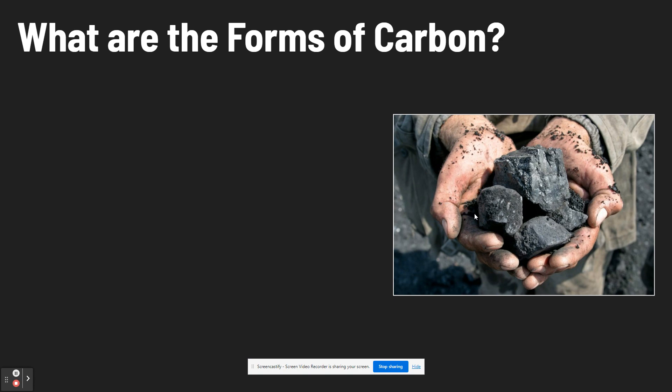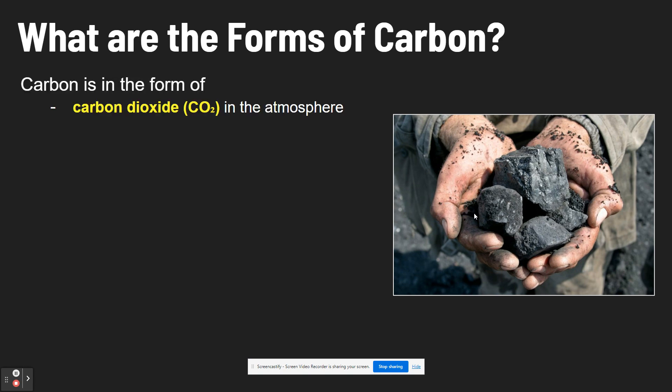Before we get to how it cycles through, let's talk about what forms carbon takes in each one of those spheres. Carbon is in the form of carbon dioxide — CO2 — when it's in the atmosphere.